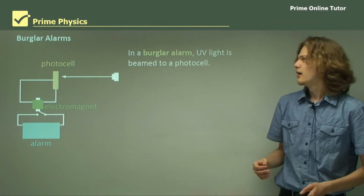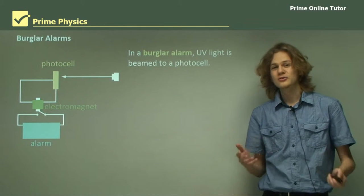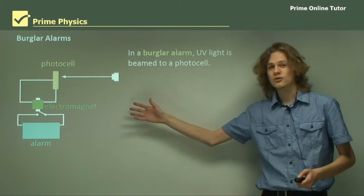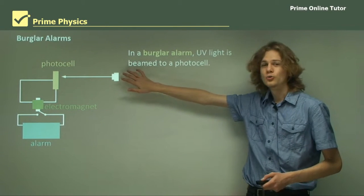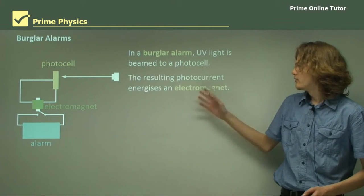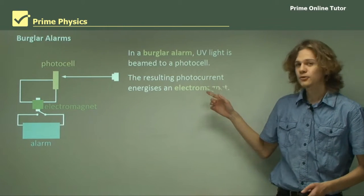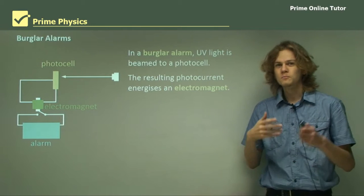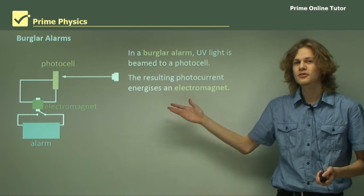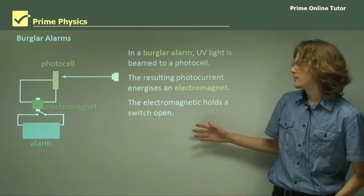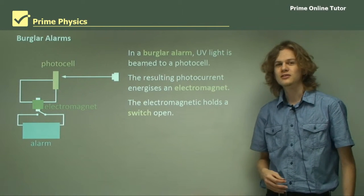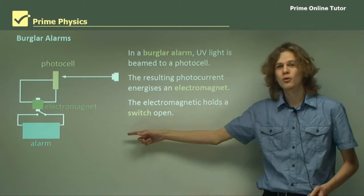Onto burglar alarms. Photovoltaic cells aren't used like this very often anymore, but it's still a use. In a burglar alarm — we can see a schematic here — a little ultraviolet light source beams light to a photocell. The photocurrent from the photocell energizes an electromagnet. Obviously, some sort of amplifier is needed in the circuit because otherwise the photocurrent produced will be very small, though I've left that out of the diagram for clarity. The electromagnet, as we can see here, is holding open a switch. The switch is spring-loaded, so if the electromagnet is suddenly deactivated, the switch will fall into place and complete the bottom circuit.